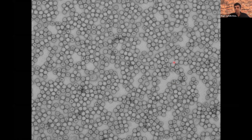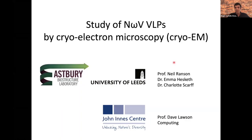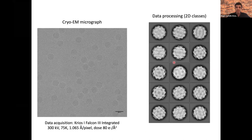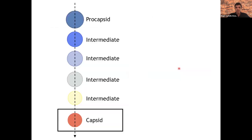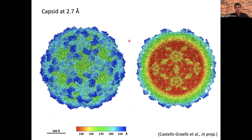For the cryo-EM aspect, we collaborated with the University of Leeds, where they have an amazing team and amazing microscopes. We bring the particles, freeze them, collect images of the particles in ice, perform classifications, and do 3D reconstructions. Now I'm going to show you the structure for the capsid, which we solved to 2.7 Angstroms resolution. You can see in great detail all the features from both the outside and the inside of the particle.